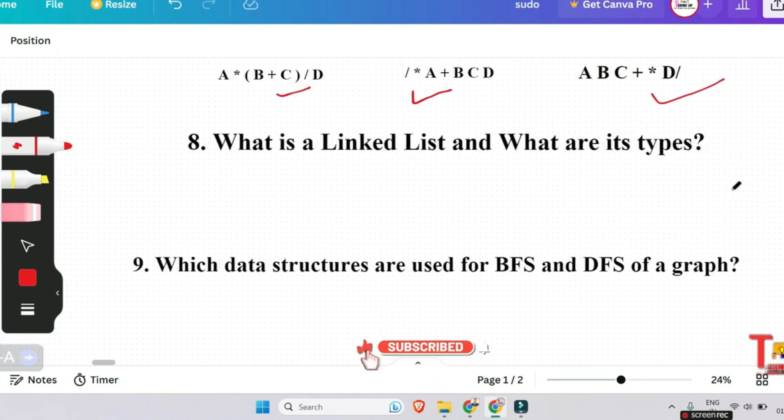The next question is, what is linked list and what are its types? A linked list is a linear data structure like arrays, where each element is a separate object. Each element that is node of a list is comprised of two items, that is the data and a reference to the next node. So what are the types of it? Singly linked list, doubly linked list, circular linked list. So you have to give some explanation about all of them.